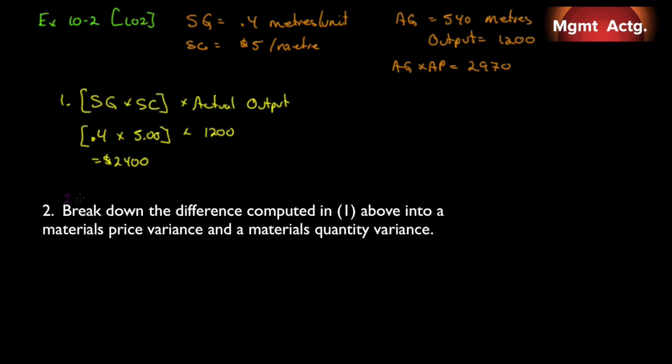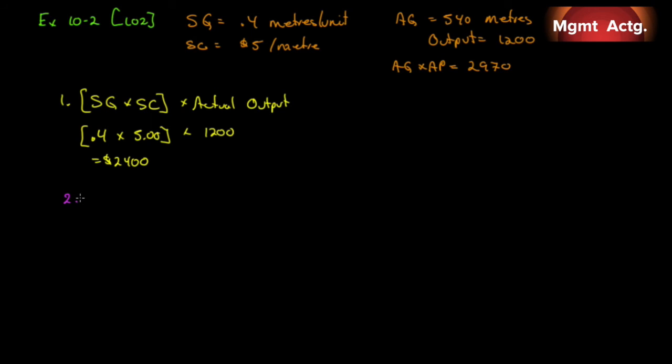Number two in this question asks, break down the difference computed in one above into a material price variance and the materials quantity variance. Oh, sorry. We're not quite done. Number one, let me just jump back a minute. It asks, how much greater or less is this than the cost that was incurred? So the cost that was incurred, the actual cost, $2,970 minus the $2,400 equals $570. Since this is greater than 0, remember any difference that's greater than 0 is unfavorable. So it's $570 unfavorable.